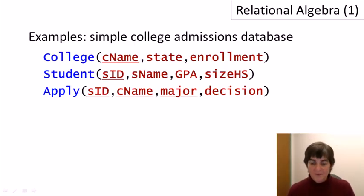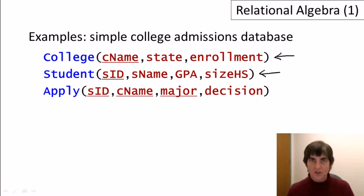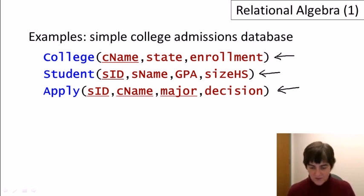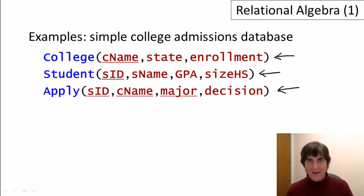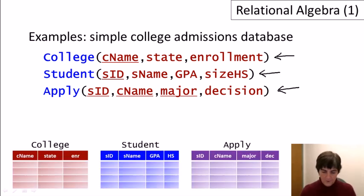For the examples in this video, we're going to be using a simple college admissions database with three relations. The first, the college relation, contains the college name, state, and enrollment. The second, the student relation, contains an ID for each student, the student's name, GPA, and the size of the high school they attended. The third relation contains information about students applying to colleges: student ID, college name, major, and the decision. The underlined attributes are the keys — a key is an attribute or set of attributes whose value is guaranteed to be unique.